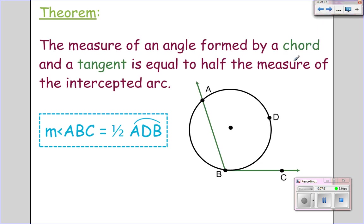Alright, and finally our last theorem. The measure of an angle formed by a cord, so a cord is right here in this circle, and a tangent, which is outside the circle that touches at one point, is equal to half the measure of the intercepted arc. So it's the same kind of concept as an inscribed angle.